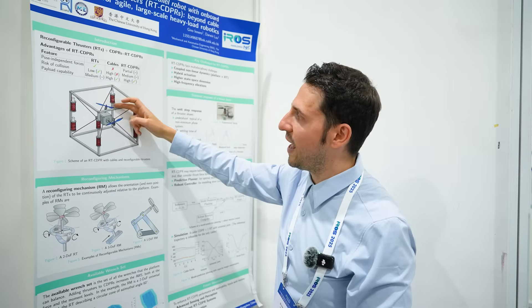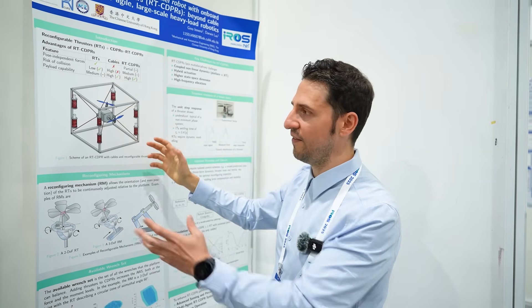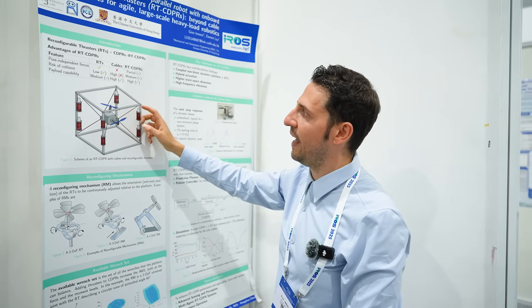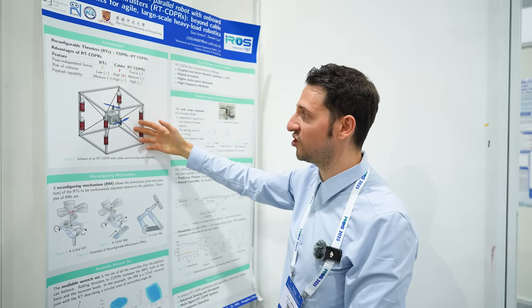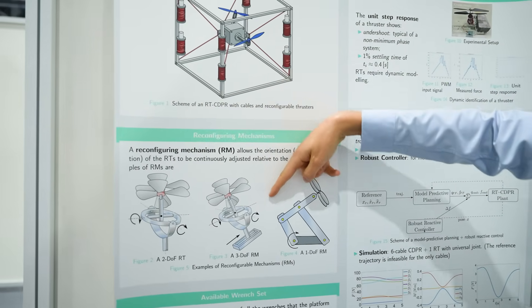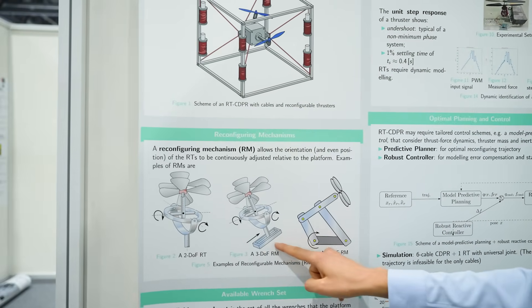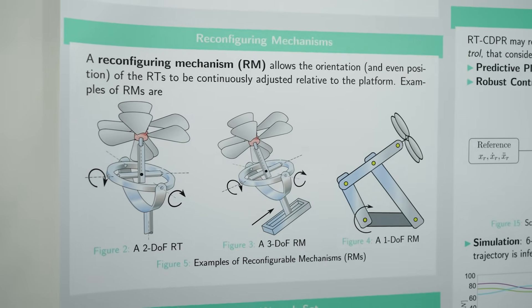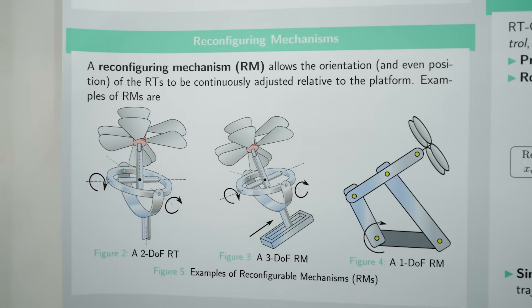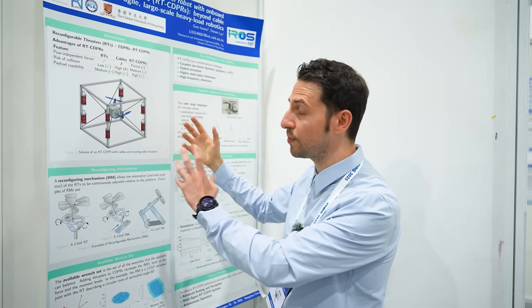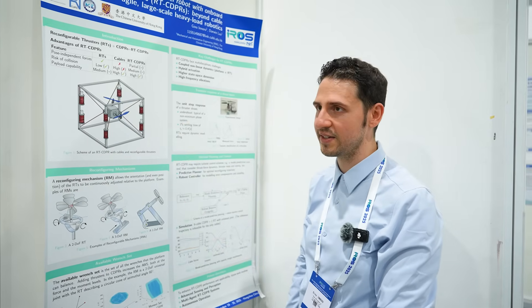So to remove cables, we add thrusters on top of it, having a hybrid system. Thrusters can help cables, and to improve the acquisition capacity of the system, we have reconfigurable thrusters. This means that the thrusters are not fixed aboard the platform, but there is usually a kinematic joint. And the kinematic joints have motors that can be controlled to improve and exploit the full capacity of the system.